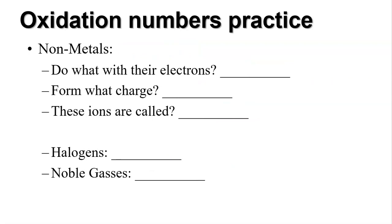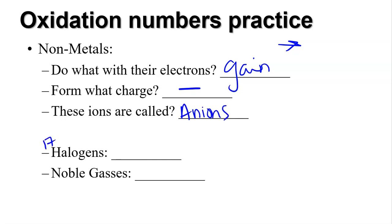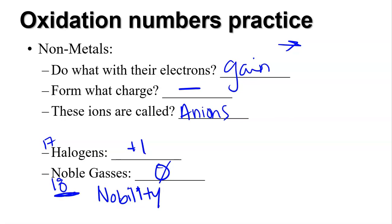How about your nonmetals? Your nonmetals are on the right-hand side of your periodic table, and they tend to gain electrons. So they form a negative charge, and these are called anions. Your halogens are group 17, and they will gain one electron. Your noble gases are in group 18, and they gain no electrons. Remember, noble gases are nobility — everybody wants to be like them. They already have a full valence shell, so they don't want to share.